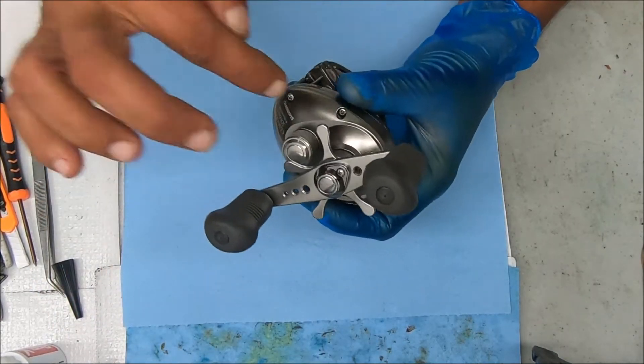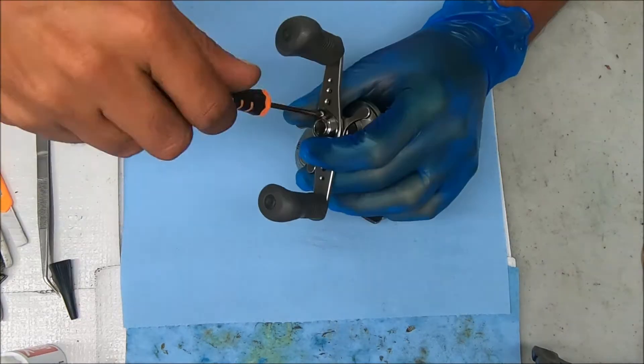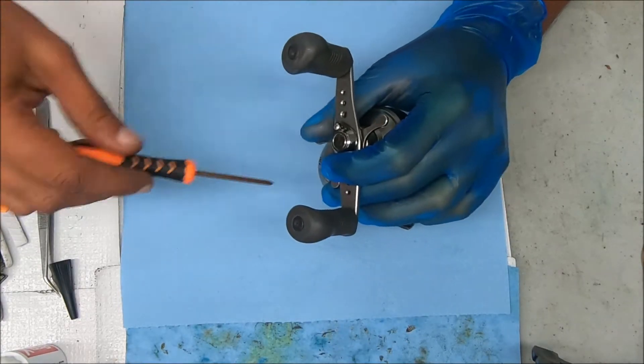Next we're going to remove the handle and get that stack off. Undo the screw here for that lock nut cover.